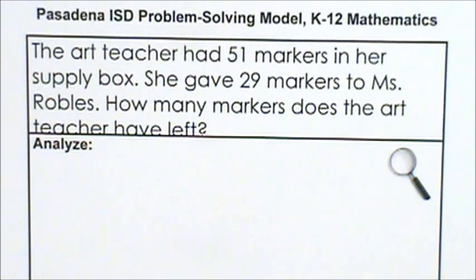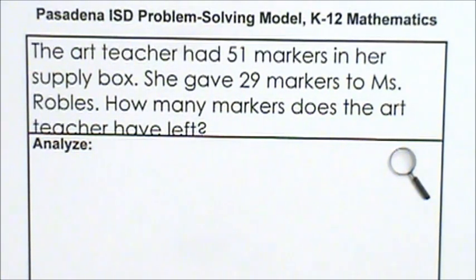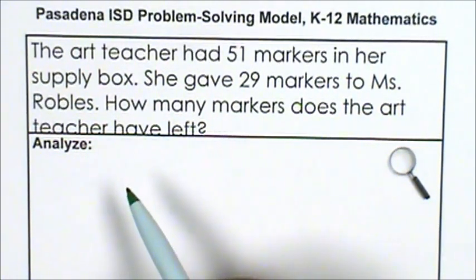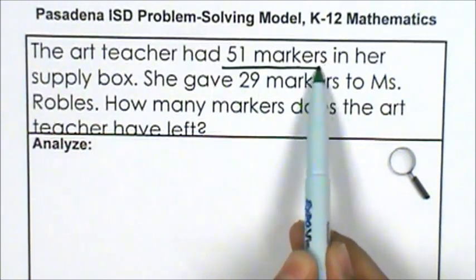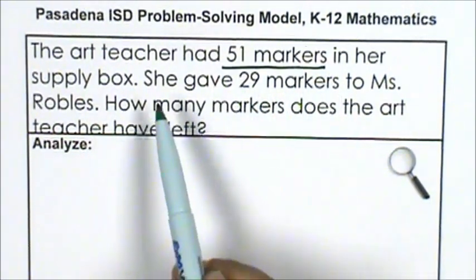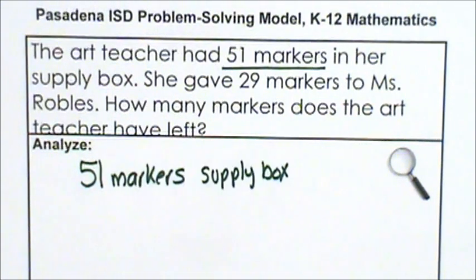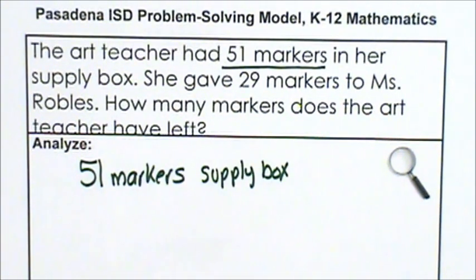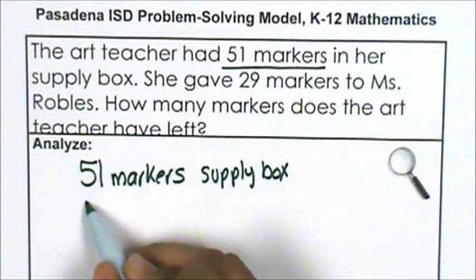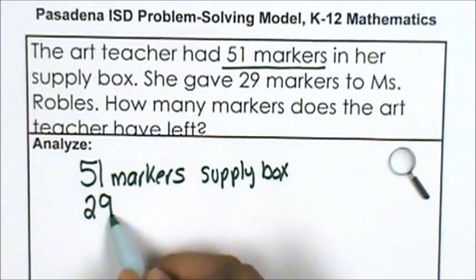First, I'm going to analyze the problem. What information do I know? Well, I know that the art teacher had 51 markers in the supply box. She gave 29 markers to Ms. Robles — so, 29 markers.